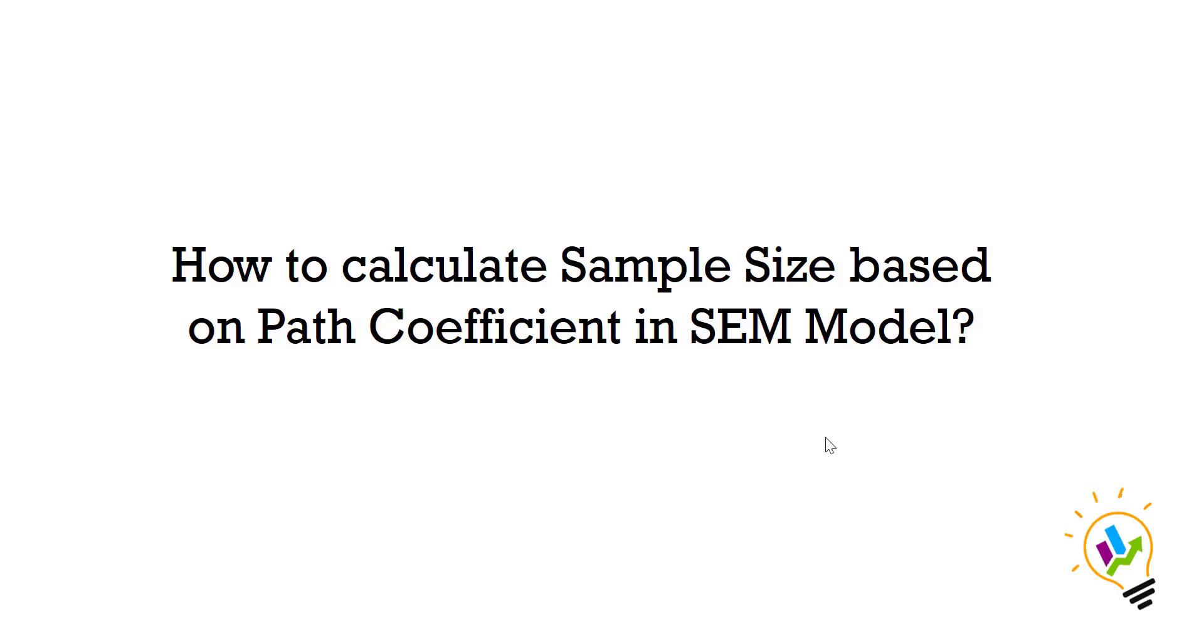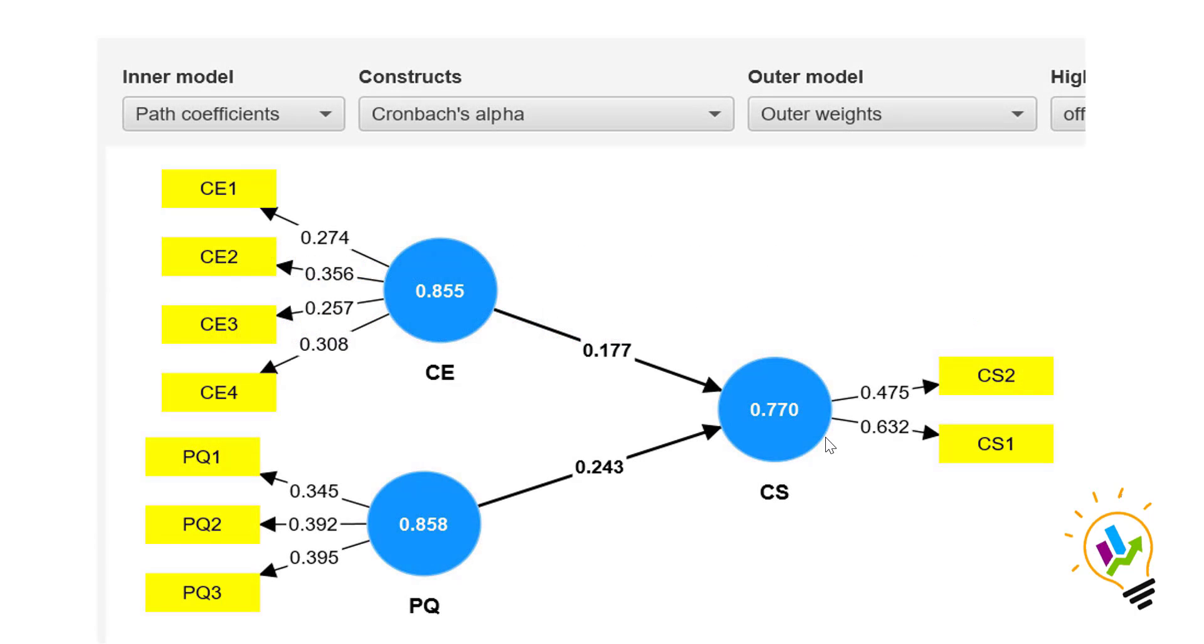How to calculate sample size based on path coefficient in SEM model. Imagine we have a model with one dependent variable and two independent variables. You can see customer satisfaction, the dependent variable, and we have two independent variables: customer expectation and the perceived quality. After doing the Smart PLS analysis...